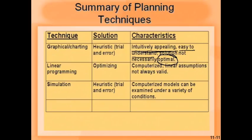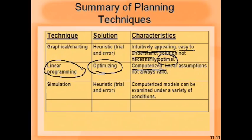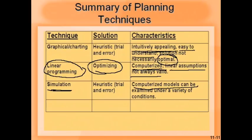Sometimes people use linear programming to optimize solutions. It can be computerized — once the formula is set up it can be fed into a computer to generate the plan. The limitation is that the linear assumptions used in linear programming may not always be valid, as some relationships could be non-linear. Simulation is also a good way of assessing any plan; it is heuristic or trial-and-error based. Computerized simulation models allow variables to be changed very easily, making it easy to do what-if analysis — what if we subcontract at a certain cost, what if we have two more machines, or three fewer people.